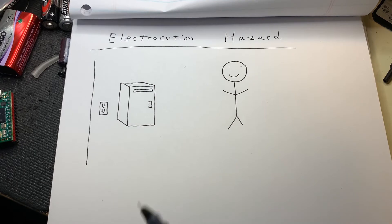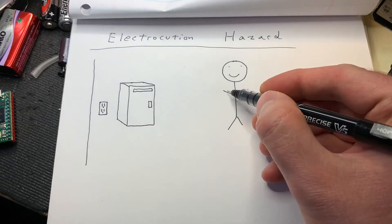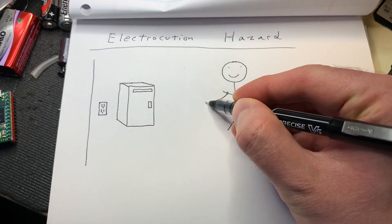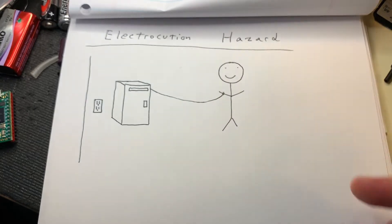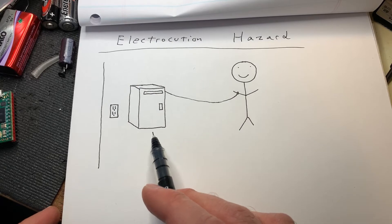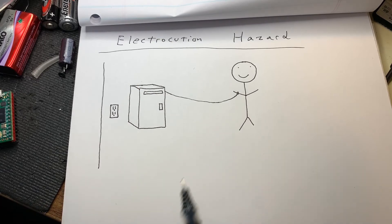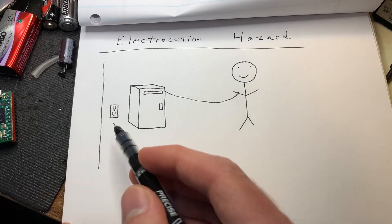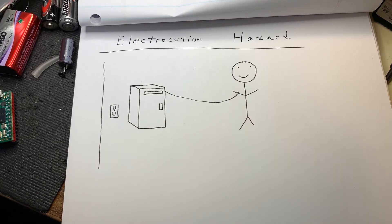So when you're working on a computer, for example, generally you would have the wrist strap attached to the metal case of the computer, and in doing this you are referencing yourself to the computer and equalizing your voltage levels. And in this particular case, with the computer unplugged, that's perfectly fine. There's no inherent risk in doing that.